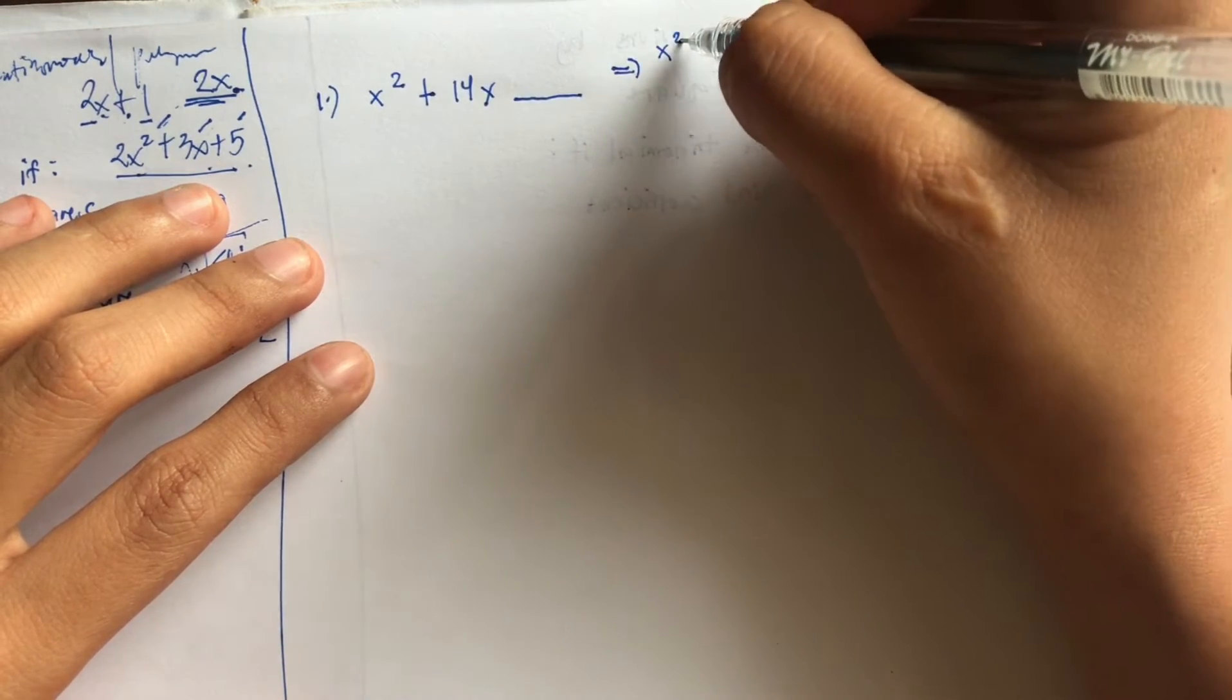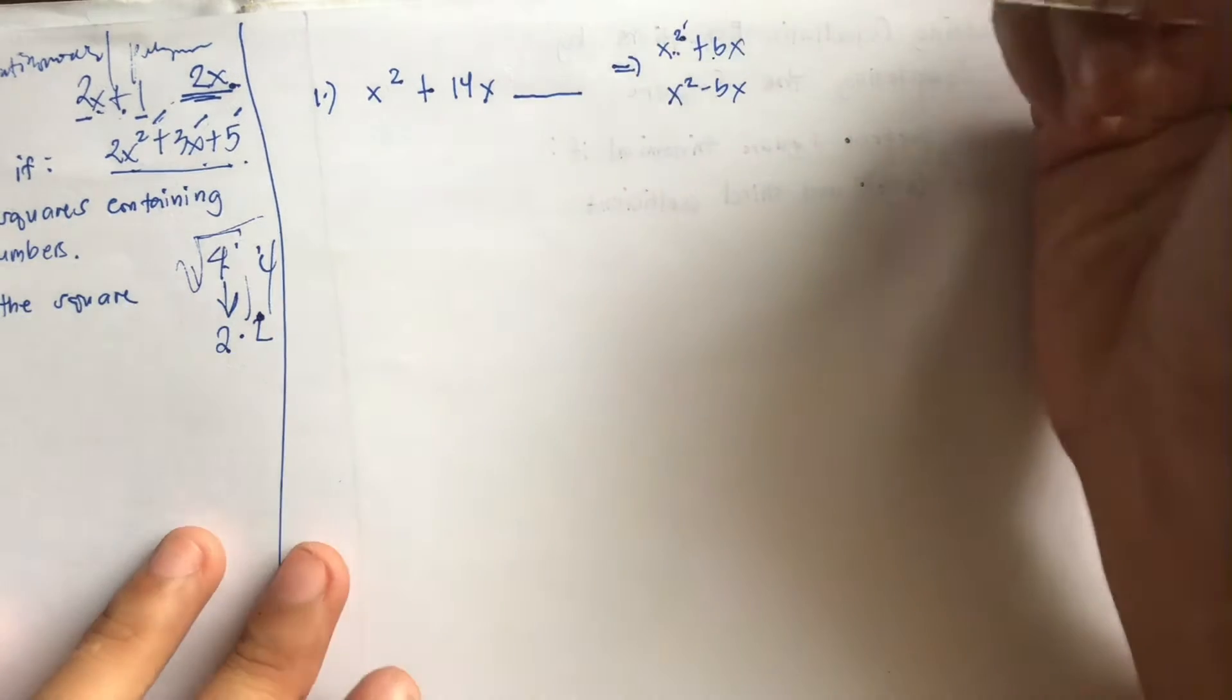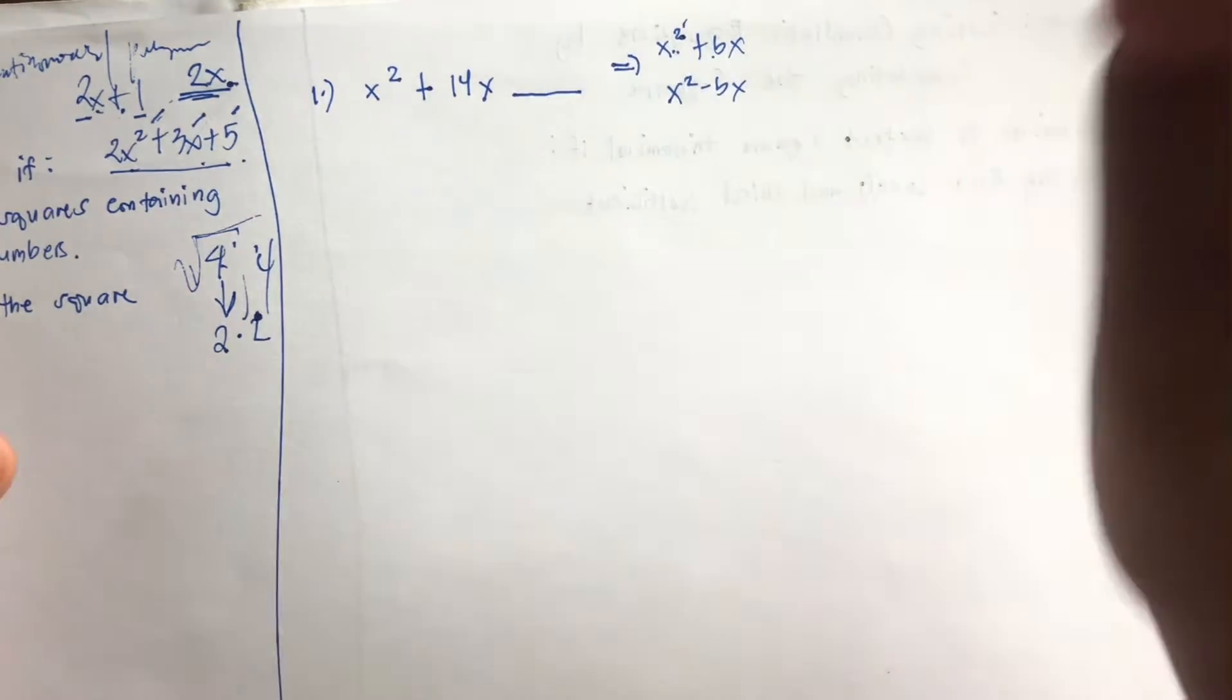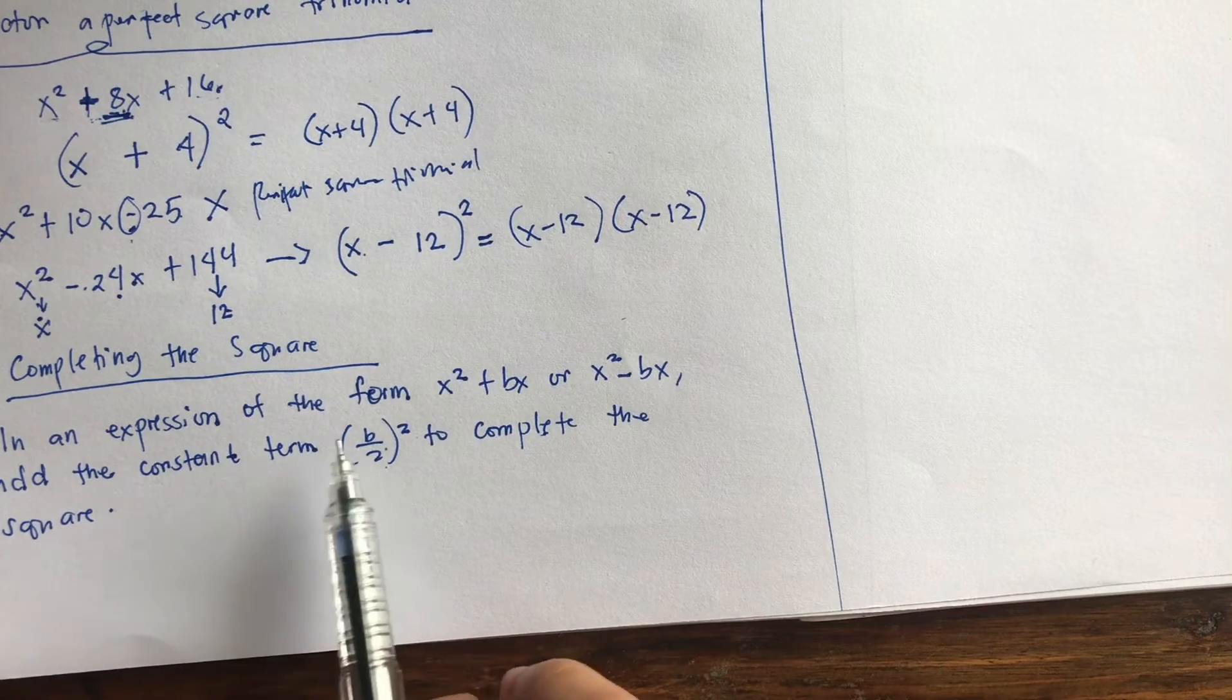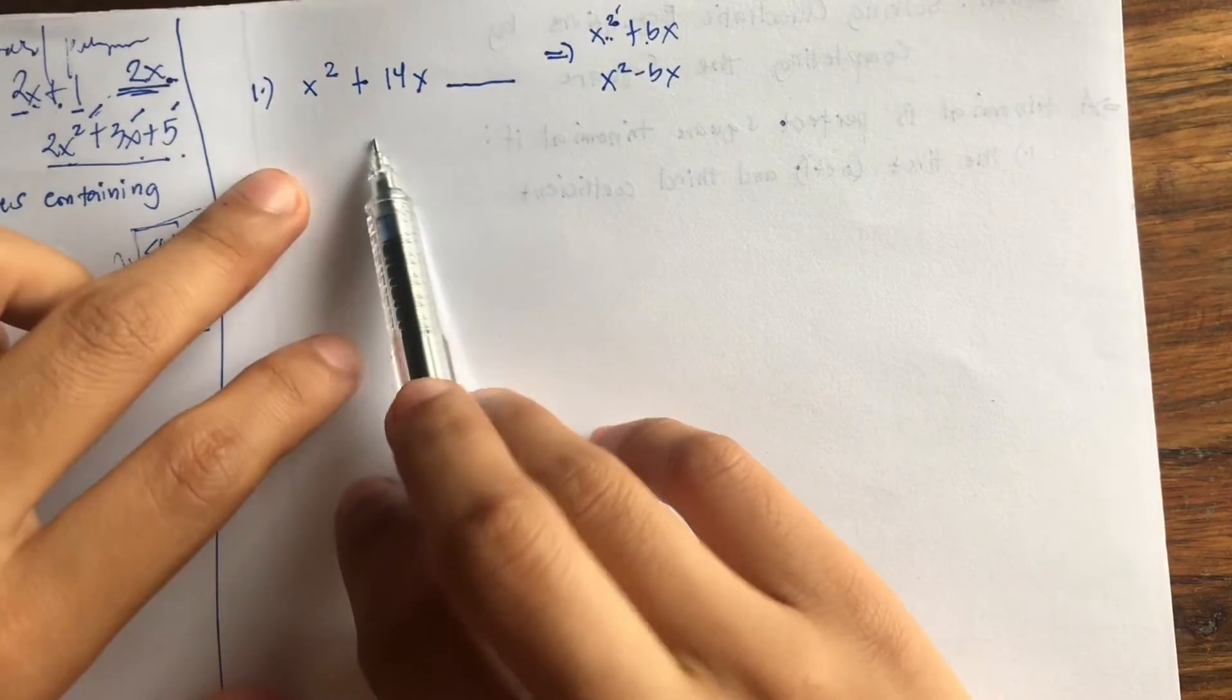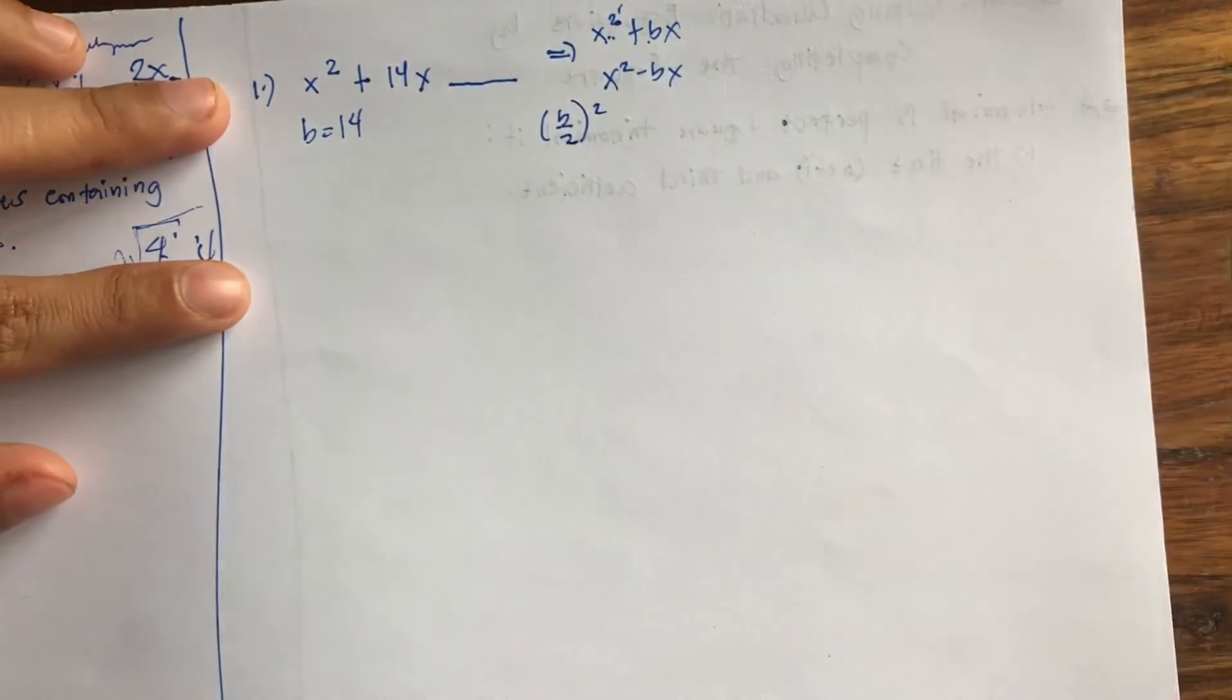But then this expression, since the middle operation is addition, then this is taken from the expression x squared plus bx. So we have to complete the square, and then we are going to write each completed square in factored form. For number 1, in an expression of the form x squared plus bx or x squared minus bx, add the constant term b over 2 squared to complete the square. So we need to find b. This is x squared plus bx, so the value of our b here is 14.